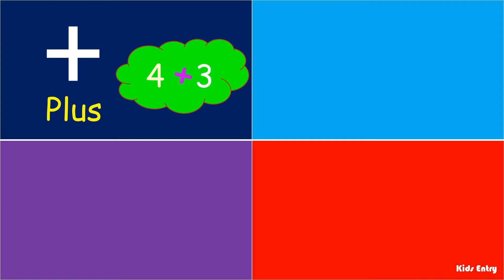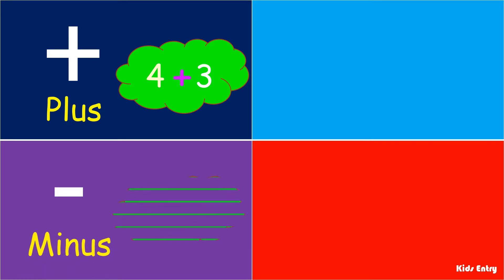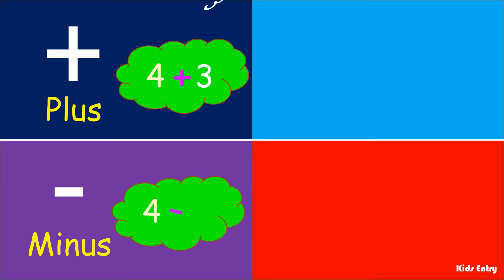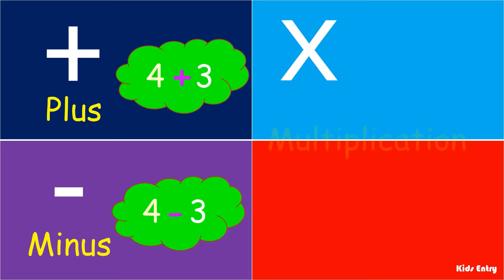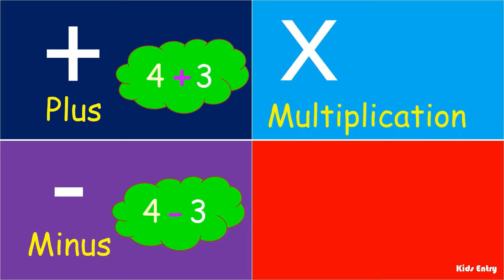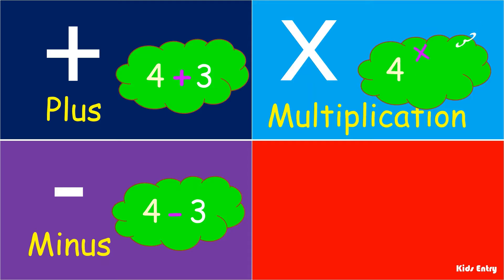Plus sign — this sign is used for adding two numbers. Minus sign — this sign is used for subtracting two numbers. Multiplication sign — this sign is used for multiplying two numbers.